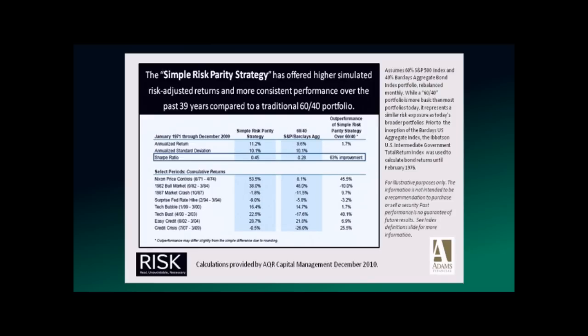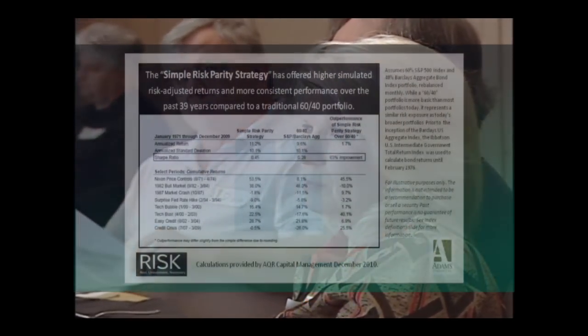A long-term risk parity strategy between commodities, high-quality bonds, and the U.S. stock market averaged 11.2% from 1976 to the end of 2010, while the 60-40 model only made 9.6% — an improvement in return with the same standard deviation, since they're targeting it to be the same. During the Nixon price controls period from 1971 to 2009, a tough time for the market, stocks in a 60-40 portfolio made 8%, while risk parity made 53%.